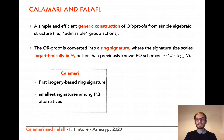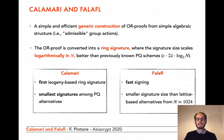Calamari is the instantiation with isogeny assumptions and it is the first isogeny-based privacy-preserving signature scheme. It produces the smallest signatures among post-quantum alternatives. Falafel is the instantiation with lattice assumptions. Signing is much faster than Calamari, and from n approximately 1024 the sizes of the signatures produced by Falafel are smaller than any other lattice-based ring signature.